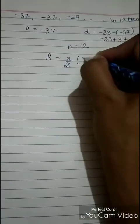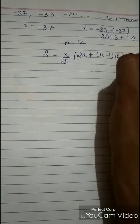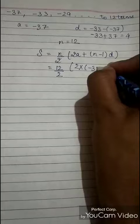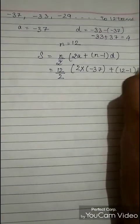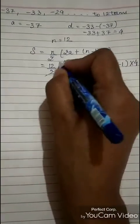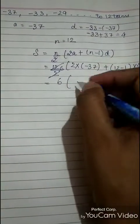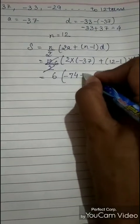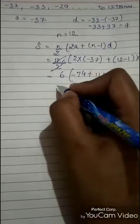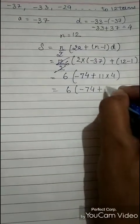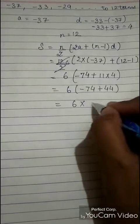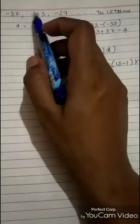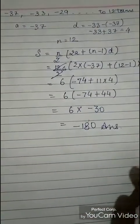Find the sum using S equals N upon 2 times 2A plus N minus 1 into D. Here N is 12 upon 2, 2 into minus 37 plus 12 minus 1 into 4. Cancel to get 6. Solving: 6 times minus 74 plus 11 into 4, which gives 6 times minus 74 plus 44, equals 6 into minus 30. So the sum is minus 180. Sum of the terms of this AP up to 12 terms is minus 180.